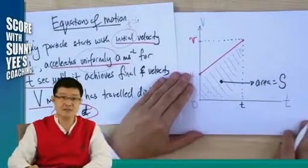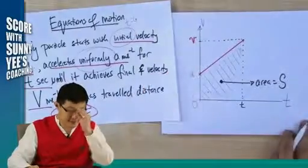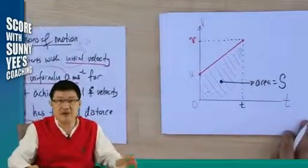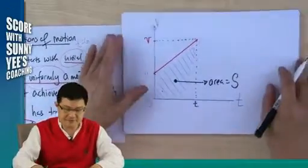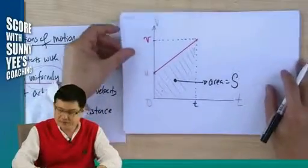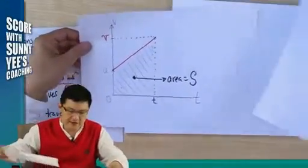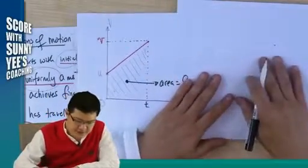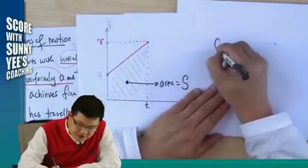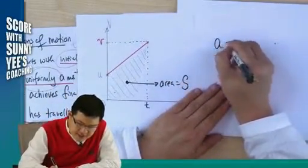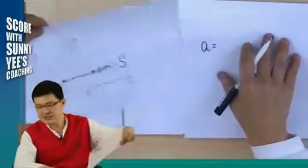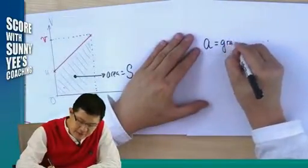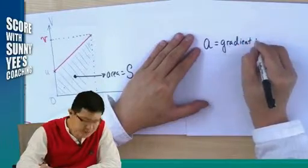Now let's derive the equations. If you look at the diagram of the graph, the first thing is: what is the definition of acceleration here? Acceleration is the gradient — acceleration gives you the gradient of this graph.